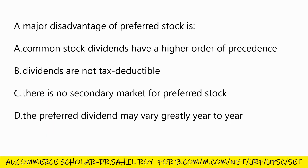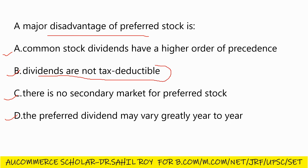Our next question: a major disadvantage of preferred stock is — Option A: common stock dividends have a higher order of precedence; Option B: dividends are not tax deductible; Option C: there is no secondary market for preferred stock; Option D: the preferred dividend may vary greatly year to year. The correct answer is Option B: dividends are not tax deductible.